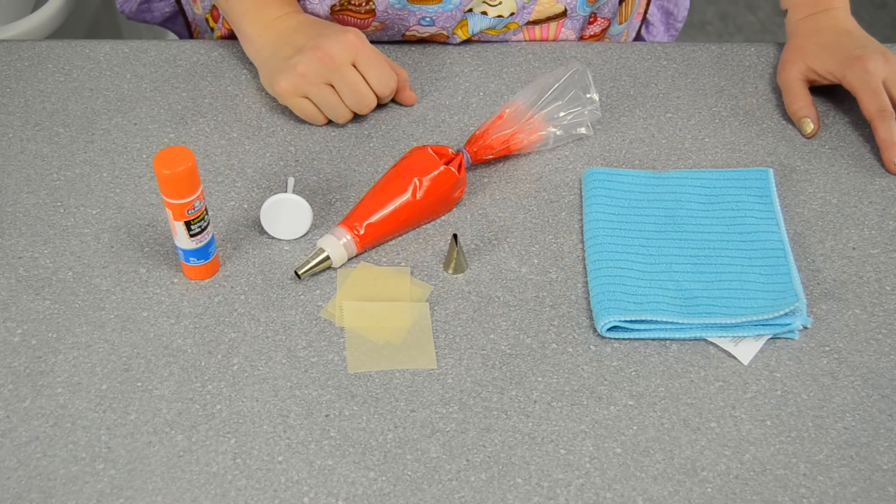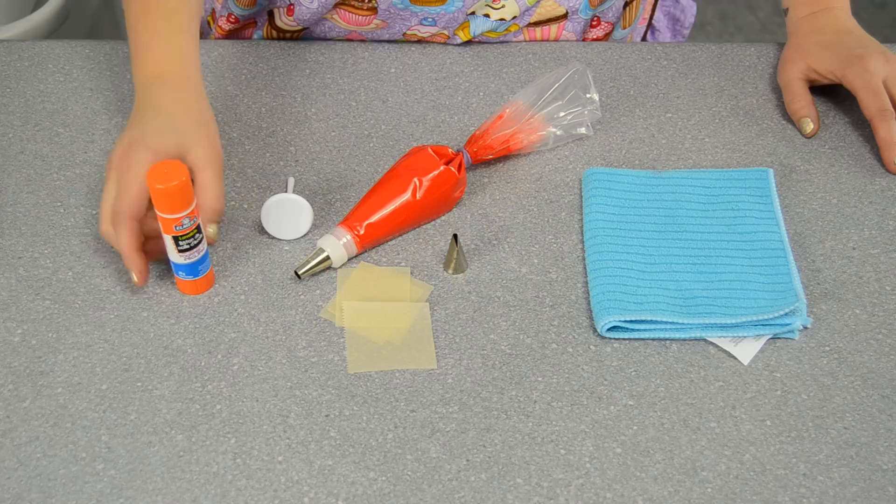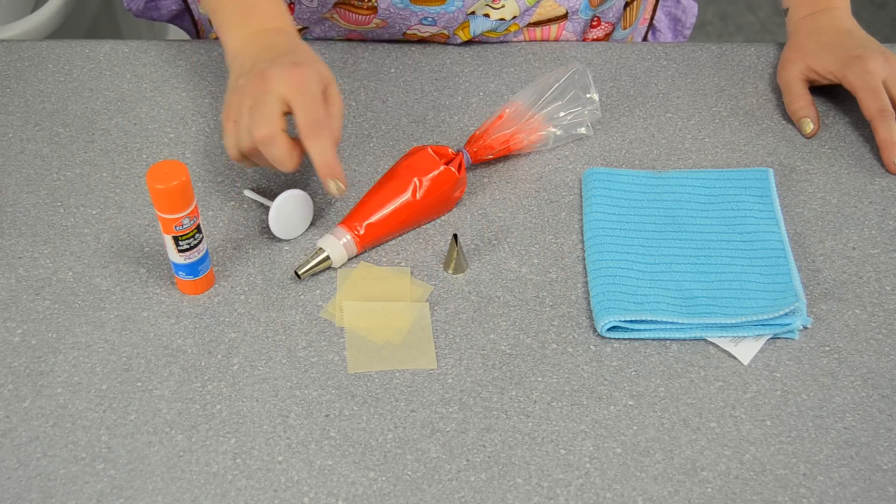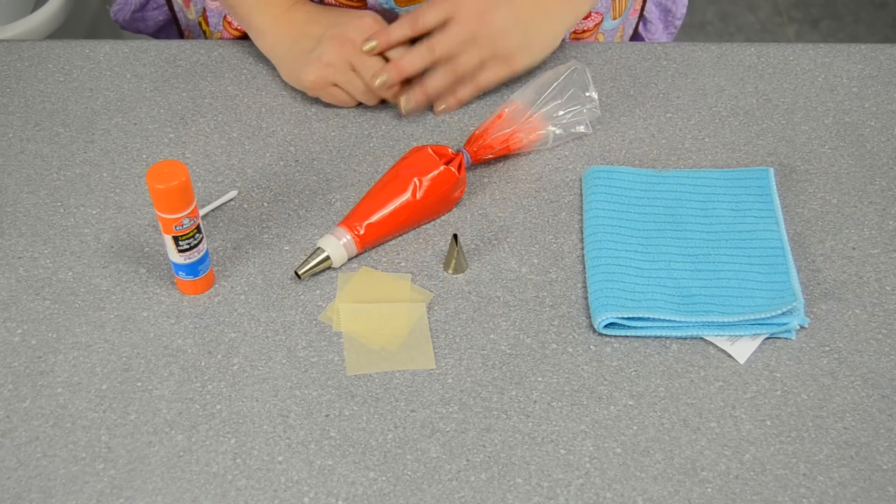You can use any petal tip; I'm just going to show you on the larger size. You'll need some non-toxic glue, flower nail and some parchment paper, and a wet cloth for cleaning your tip also comes in handy.